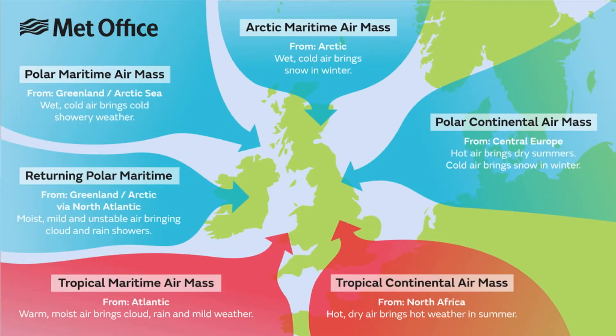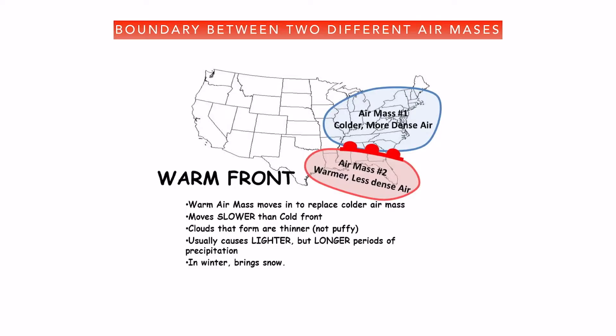Let's start with what is a front. A front is a boundary between two different air masses. These air masses are usually in motion and have different properties. So these are the two different air masses — air mass number one and number two — and the boundary between them is a front. In this figure it's a warm front, but we'll talk about it later.